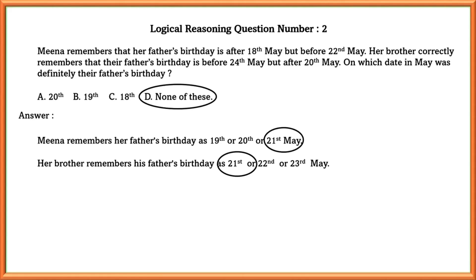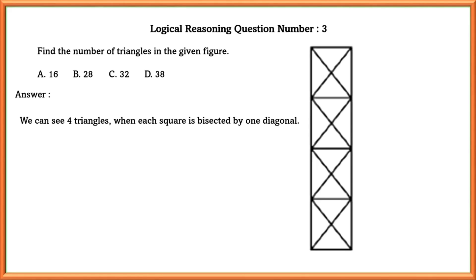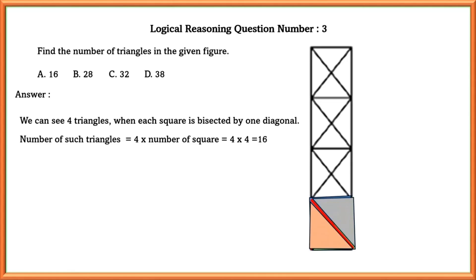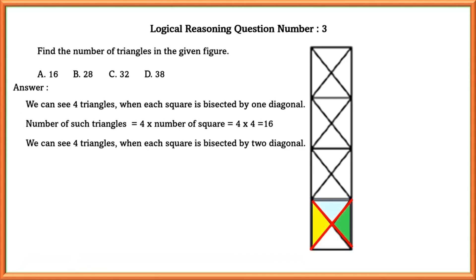Logical reasoning question number three: find the number of triangles in the given figure. We can see four triangles when each square is bisected by one diagonal. Number of such triangles is equal to four into the number of squares, which is four into four, that is 16. Similarly, four triangles when each square is bisected by two diagonals — number of such triangles is also four into four, that is 16.